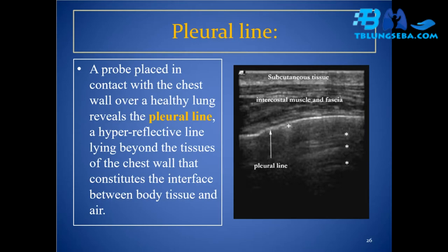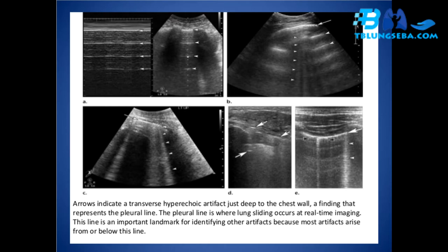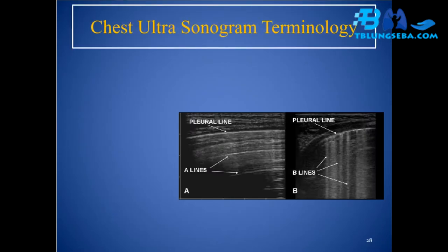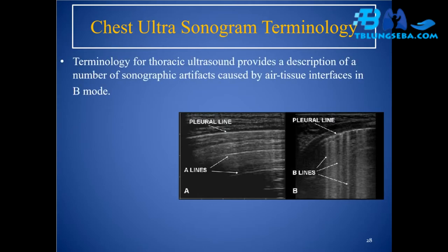Pleural line: a probe placed in contact with the chest wall over a healthy lung reveals the pleural line — a hyper-reflective line lying beyond the tissues of the chest wall, constituting the interface between body tissue and air. Arrows indicate a transverse hyperechoic artifact just deep to the chest wall, representing the pleural line. Lung sliding occurs at this line at real-time imaging, making it an important landmark for identifying other artifacts, as most artifacts arise from or below this line.